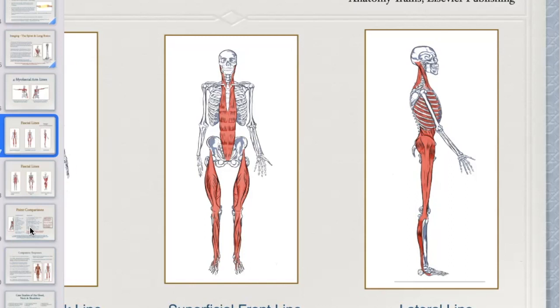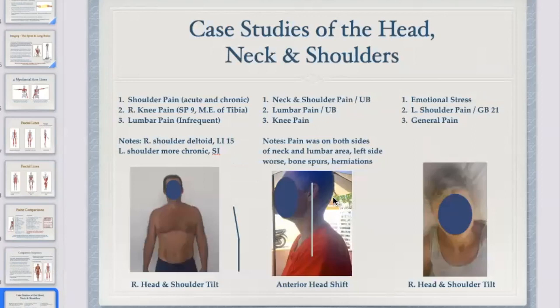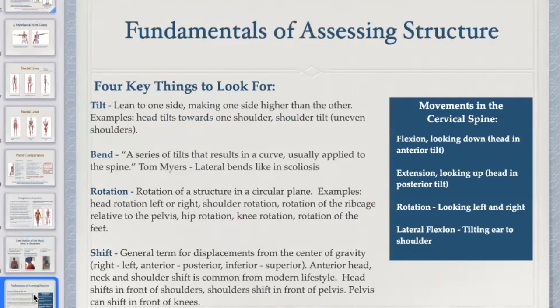In the 2-1-2 class, one of the major areas of weakness for many acupuncturists — something physical therapists, osteopaths, and other doctors understand — has to do with structure and alignment. Here are actual case studies: notice how a patient's shoulders aren't level. You'll have many patients with pain at GB 21 and uneven shoulders. There are four things to look for when dealing with neck, back, shoulder, hip, and lumbar pain — any type of musculoskeletal pain. You need to understand these four fundamentals: tilt, bend, rotation, and shift.